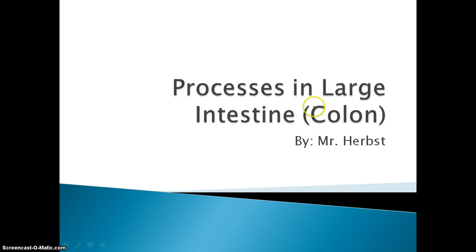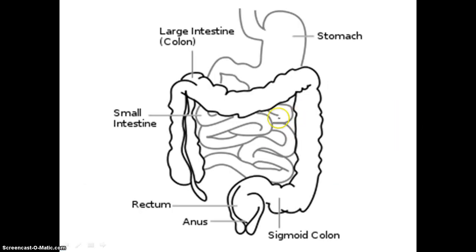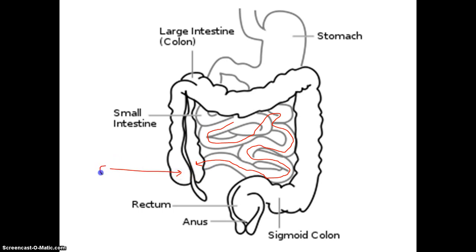The large intestine is also called a colon. In my last video, I talked about what happens in the small intestine — all this squiggly stuff right here in the middle. The small intestine's main job is to absorb all, or almost all, the nutrients that you eat in your food — up to about 99%. Eventually that chyme will come to an end point in our large intestine, at a region called our cecum, C-E-C-U-M.